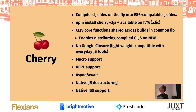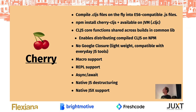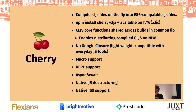The ClojureScript core functions are bundled in a shared library on NPM, which enables you to share compiled code directly on NPM. JavaScript users can directly use it without invoking ClojureScript. There is no Google Closure involved when you compile with Cherry — although Cherry itself is made with the normal ClojureScript, which is where Google Closure is used. You can still throw the compiled JavaScript at Google Closure, but that's completely optional. Cherry has support for macros, REPL support (still ongoing work), async/await — no special PROMESSA library needed, you can just write async/await — and native support for destructuring including JavaScript objects. There is also JSX support built in.